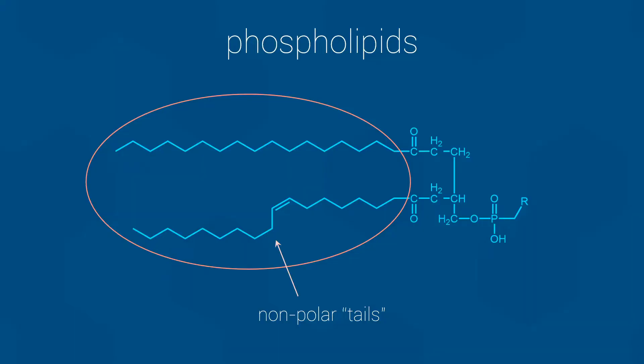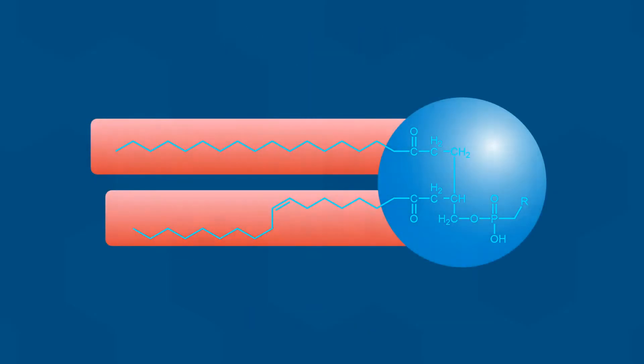So, as you can see, phospholipids contain both polar and nonpolar regions. Such molecules are referred to as being amphipathic. For simplicity, I will show the phospholipids like this for the remainder of the video.